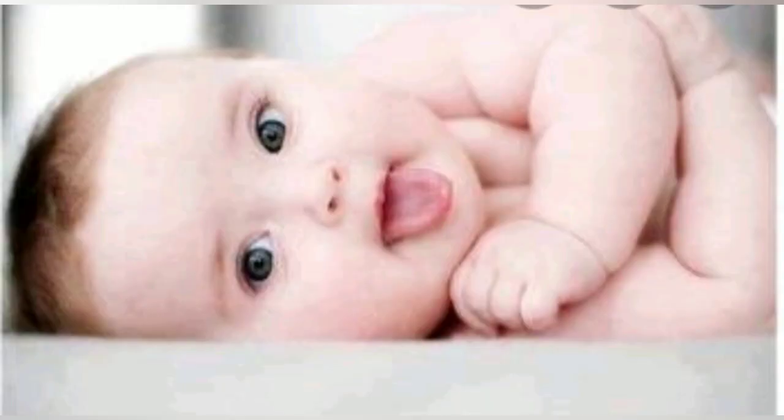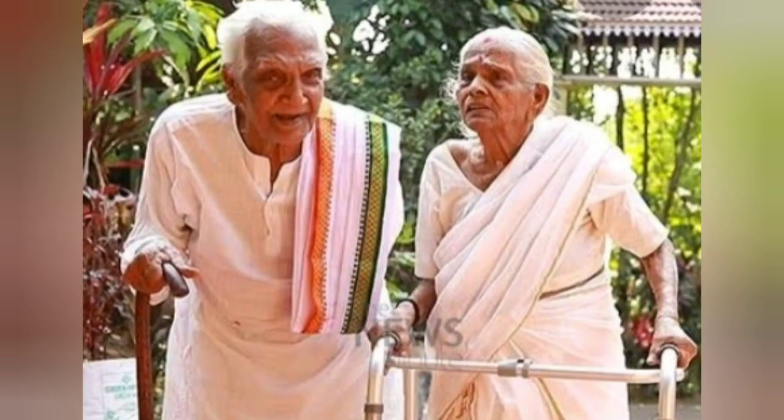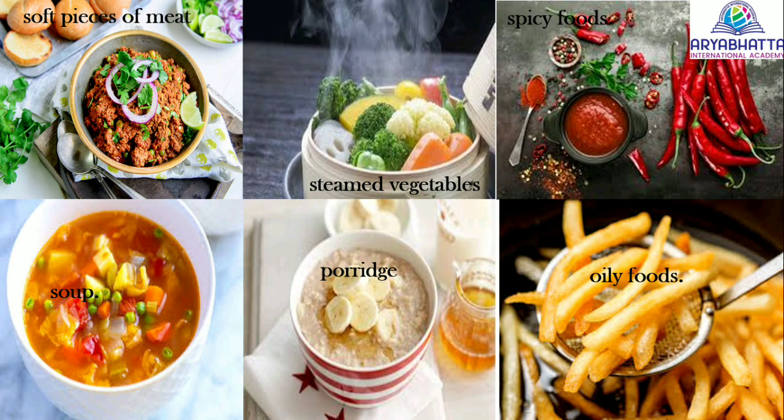Kinds of food eaten in a family. People in the same family eat different kinds of food. Babies drink a lot of milk and eat foods like porridge, kheer, eggs and mashed fruits. Old people eat foods like steamed vegetables, porridge, soft pieces of meat and soup.